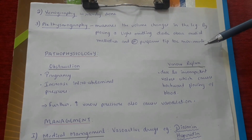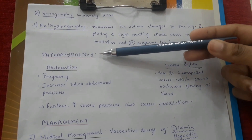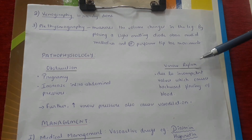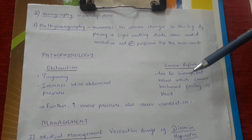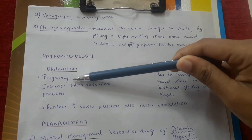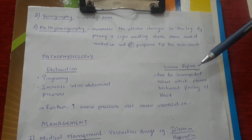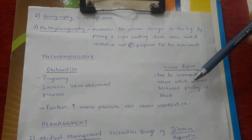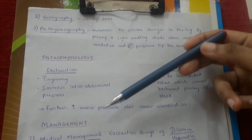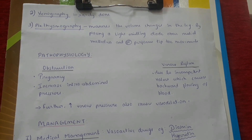Pathophysiology of varicose veins: it can occur because of obstruction or venous reflux, as discussed in the CEAP classification. Obstruction can occur because of pregnancy or increased intra-abdominal pressure. Venous reflux occurs due to incompetent valves, which cause backward flowing of blood. This further increases venous pressure, causing vasodilation of the veins.